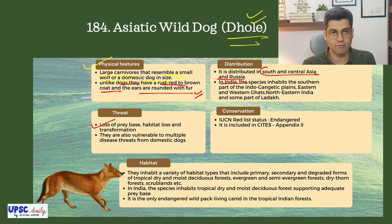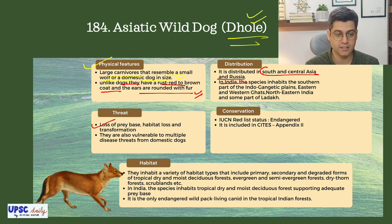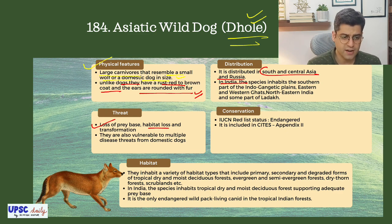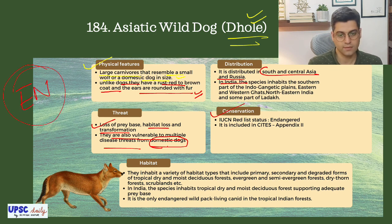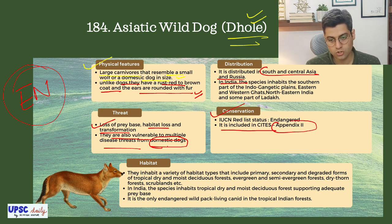Threats include loss of prey base, habitat loss and transformation. They are also vulnerable to multiple disease threats from domestic dogs. Conservation status: IUCN Red List — Endangered. It is also included in CITES Appendix 2.